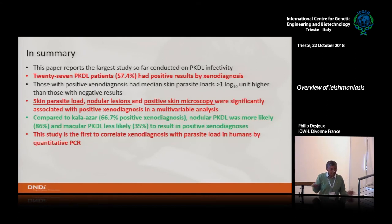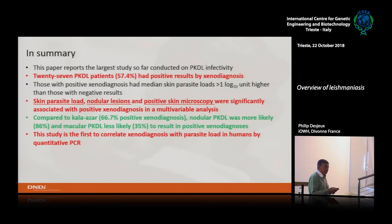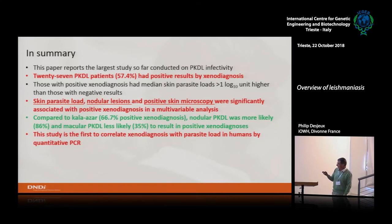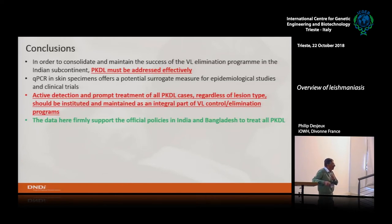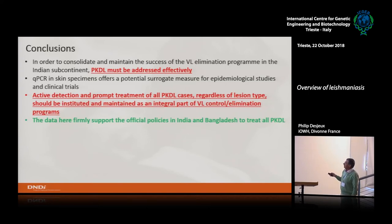Conclusion: there is a close relation between positive sand flies and patients who had a high parasitic load in nodular forms of PKDL. Of 27 PKDL patients, more than 50% — exactly 57.4% — had positive results by xenodiagnosis. Skin parasite load, nodular lesions, and positive skin microscopy were significantly associated with positive xenodiagnosis. This study was the first correlating xenodiagnosis with parasite load in humans by quantitative PCR. The progress of these techniques — quantitative PCR in skin and xenodiagnosis — made this study possible, after years of work to get the sand fly colony established in Bangladesh, which will be replicated in Sudan and Varanasi. This is really the first time we get the answer: are PKDL cases important? Of course they are. The consequence is that we must make active case detection of PKDL and treat all cases diagnosed at an early stage — it is part of the Kala-azar Elimination Programme.